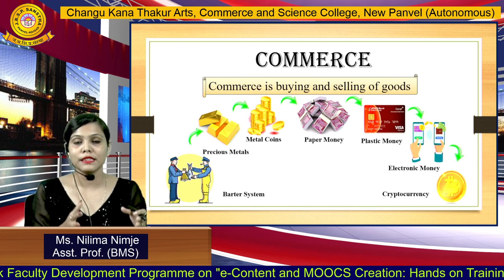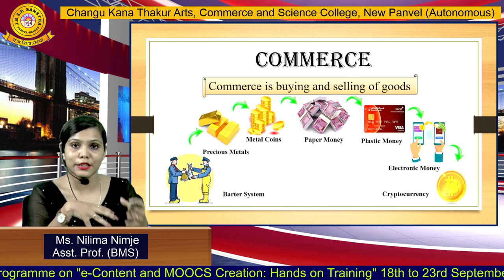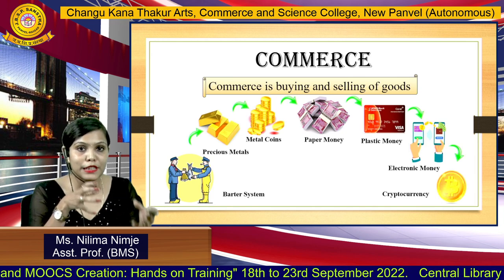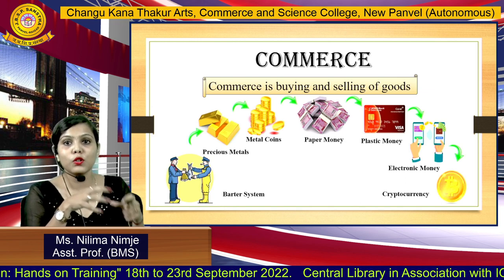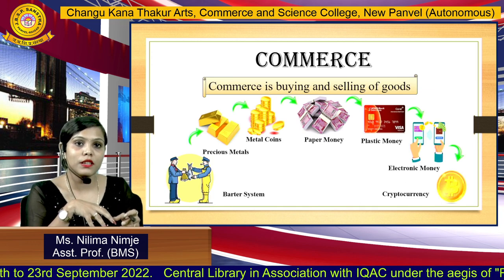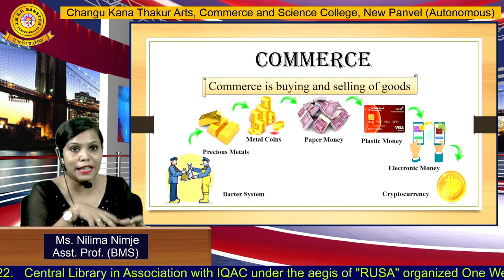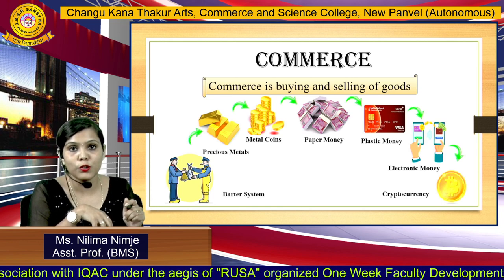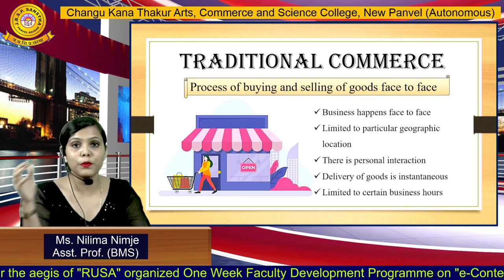Commerce is the buying and selling of goods. Many years ago it started with the barter system, which was just an exchange of goods. Later it took the shape of precious metals, then metal coins, then paper money, then plastic money in the form of credit and debit cards, then electronic money in the form of Google Pay, Phone Pay, Paytm, and the most recent one is cryptocurrency. This is how the entire evolution of commerce has taken place.